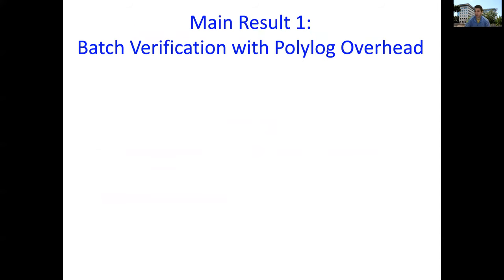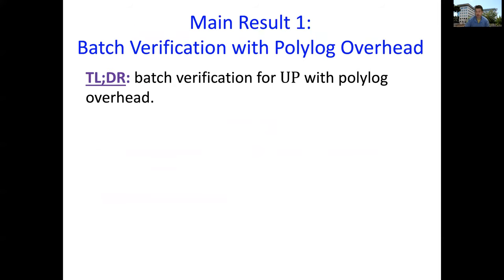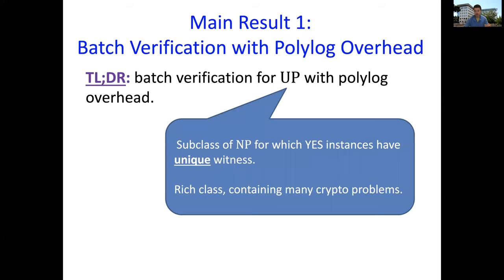Our main result there, the TLDR is that we manage to construct a batch verification protocol for a subset of languages in NP, a class called UP, with polylogarithmic overhead. What is UP? It's a subclass of NP for all NP relations in which yes instances have a unique witness.